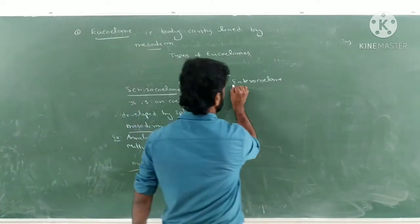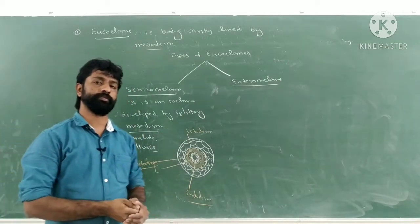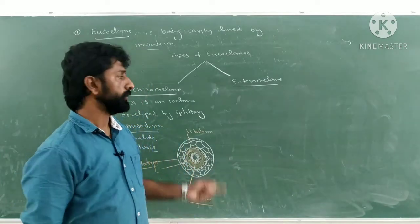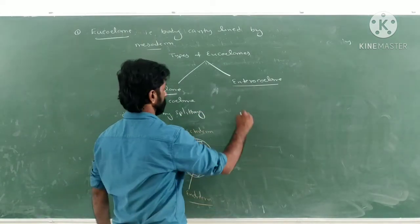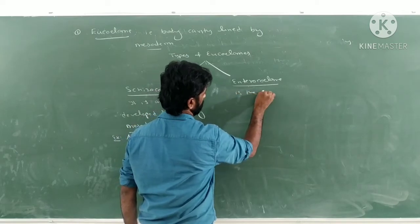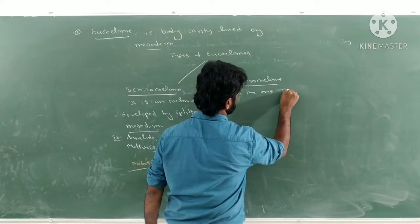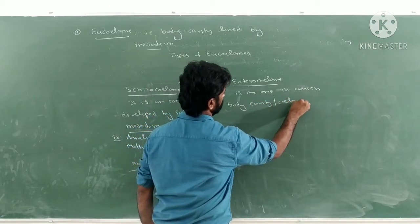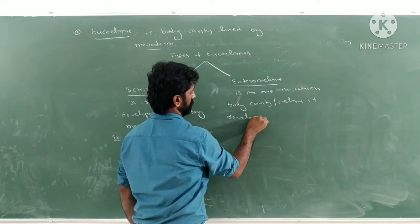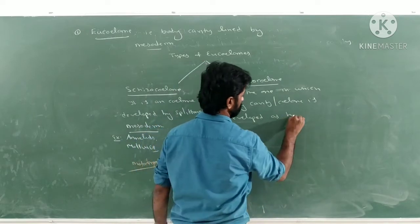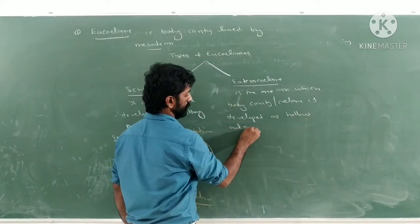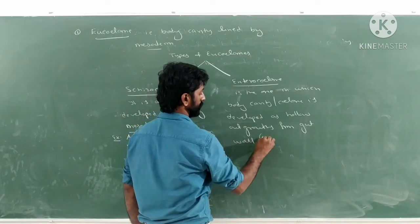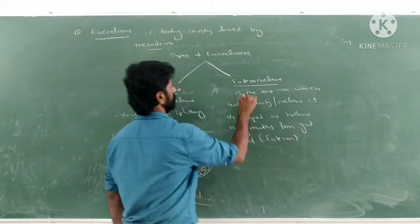The next type of true coelom is enterocoelom. Here, the body cavity develops as hollow outgrowths in the form of pouches from the enteron — that is, the gut. So this coelom is called enterocoelom.